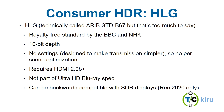HLG — Hybrid Log-Gamma — is a big one in the pro world, pushed by the BBC and NHK, because it's simple for live production: sports, events, that kind of stuff. There are no per-scene settings, making transmission very simple, though the flip side is there's no per-scene optimization. It deals with 10-bit depth. It's not yet part of the UHD spec, and the ATSC3 HDR spec is still being finalized, but it doesn't seem like any format will be cut from that. It requires HDMI 2.0b plus and can be backwards compatible with SDR displays — but only for Rec. 2020 color space.